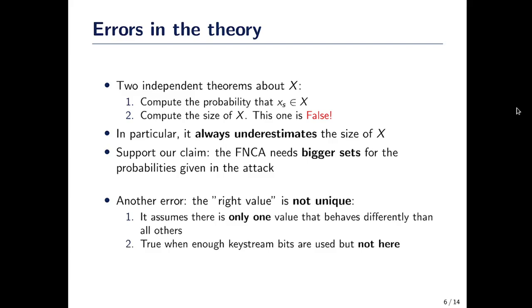It's false in such a way that the size of X is always underestimated. That means they obtain at the end a smaller set than what you would expect with the claimed probability, which explains the differences between the experimental values we obtain and what is claimed.